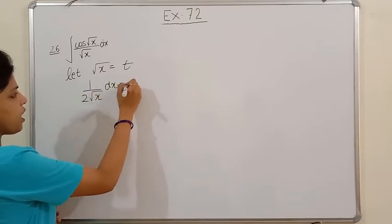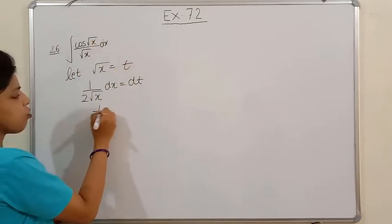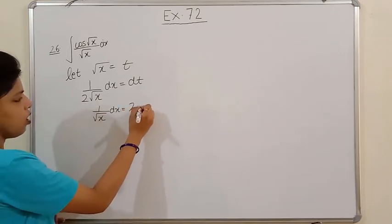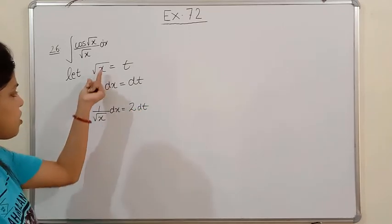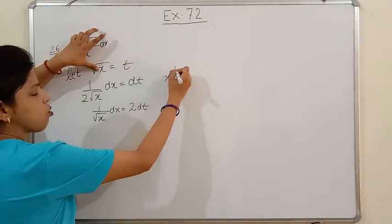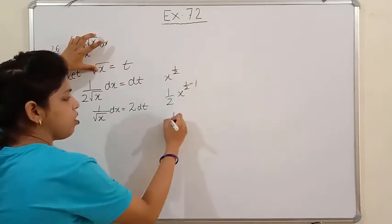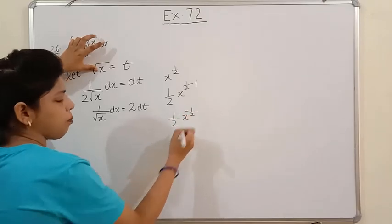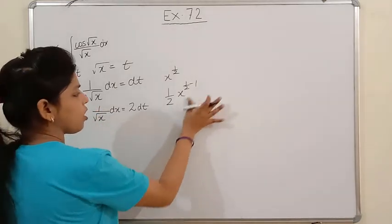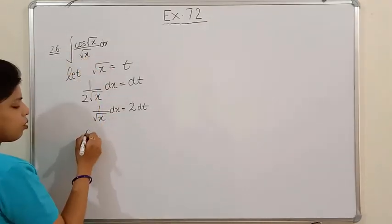Everybody knows the derivative of √x is 1/(2√x), so (1/(2√x))dx = dt. From here we get (1/√x)dx = 2dt. So we can write 1/(2√x) in this way and the solution comes out accordingly.